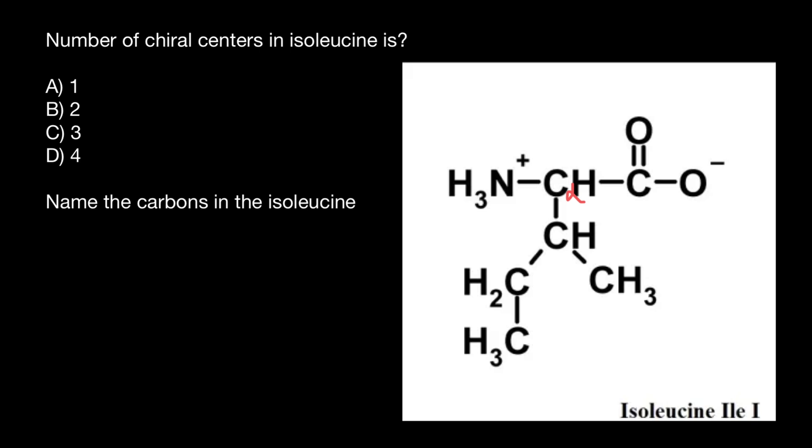Hence, isoleucine has two chiral centers. This is going to be our answer. And next question, name the carbons in the isoleucine.